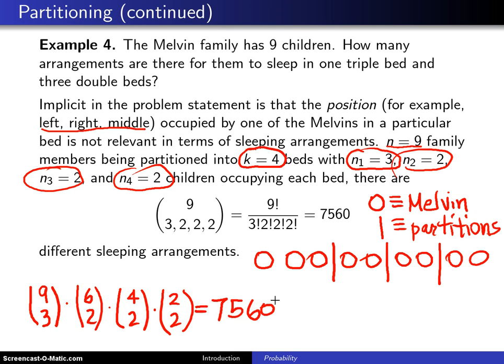So for a lot of these counting problems, there's two different ways of going at it. In this case, you are using partitions, and down here you're using both combinations and the multiplication rule together to solve the problem.